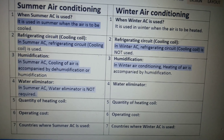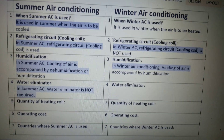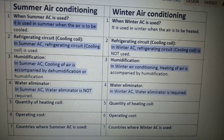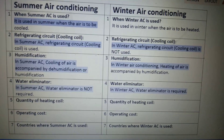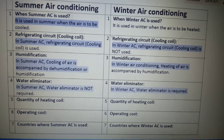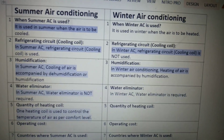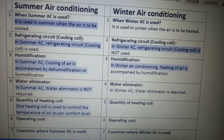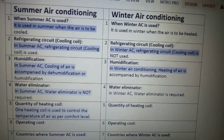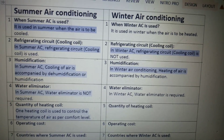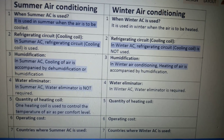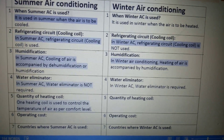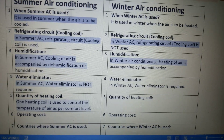Regarding the water eliminator: in summer AC, a water eliminator is not required, whereas in winter AC, a water eliminator is required. Regarding the quantity of heating coil: in summer air conditioning, one heating coil is used to control the temperature of the air as per comfort level.